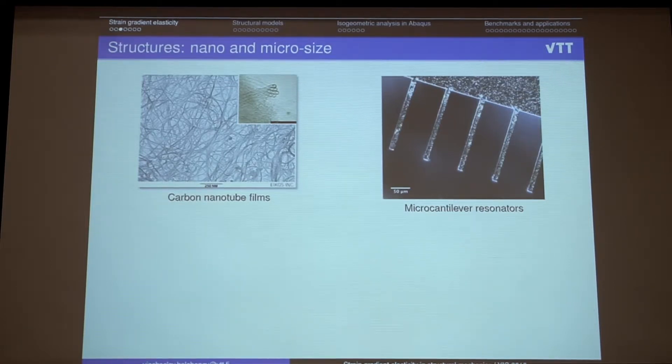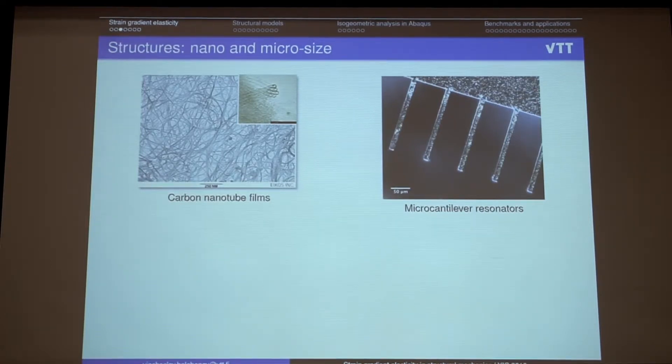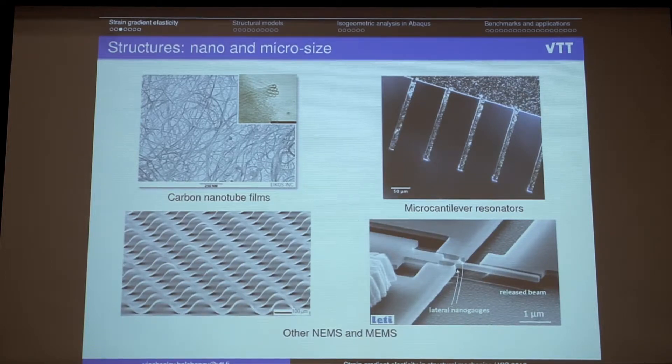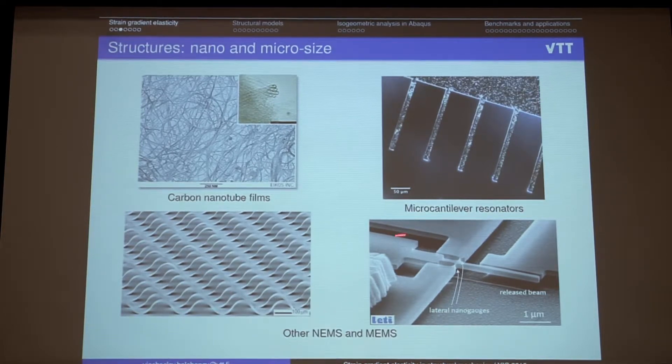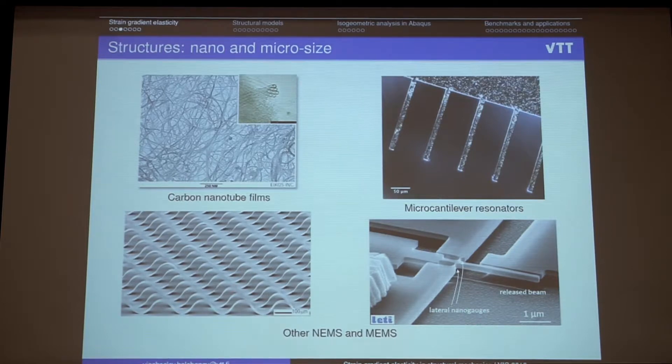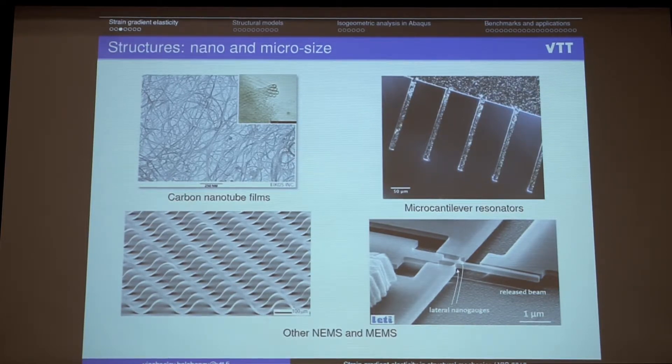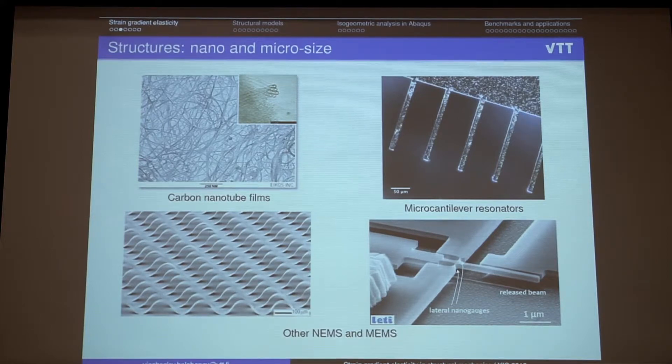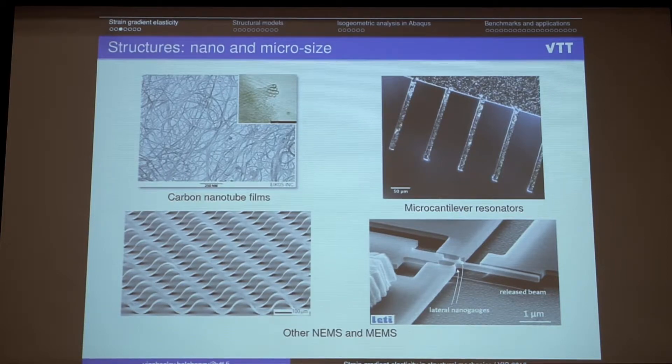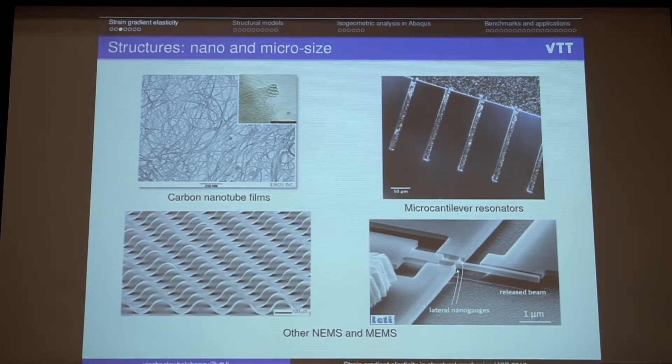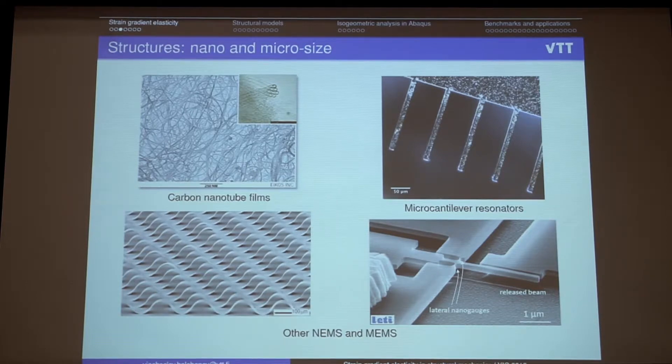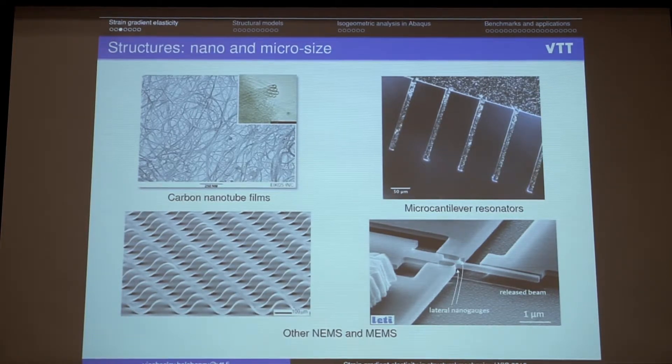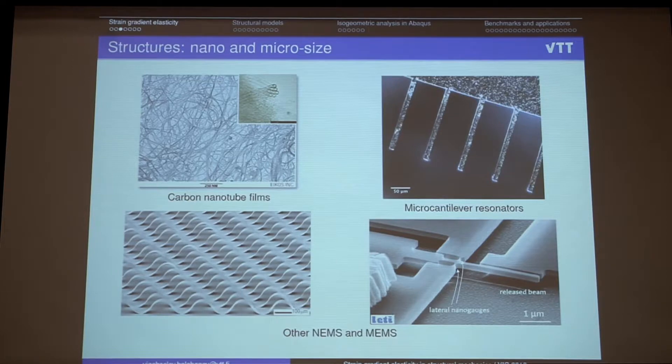And on nano and micro size, there are a lot of applications. Mostly they relate to so-called nano and micro electromechanical systems, where we have some working elements, some beams or shells, which have, let's say, thickness, compatible to the grains, if it's metal. So we cannot use just standard continuum mechanics. We need to use something more, and strain gradient elasticity helps here to describe the elastic behavior of such structures.